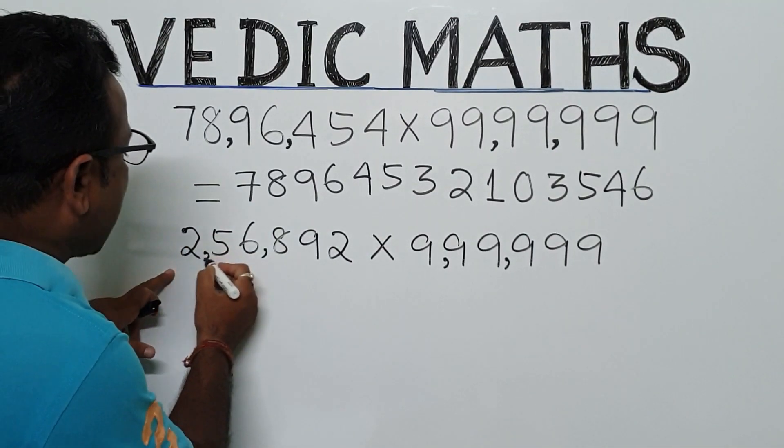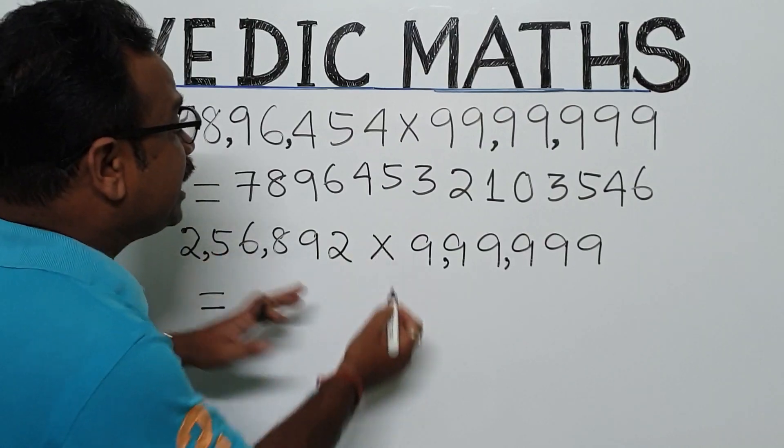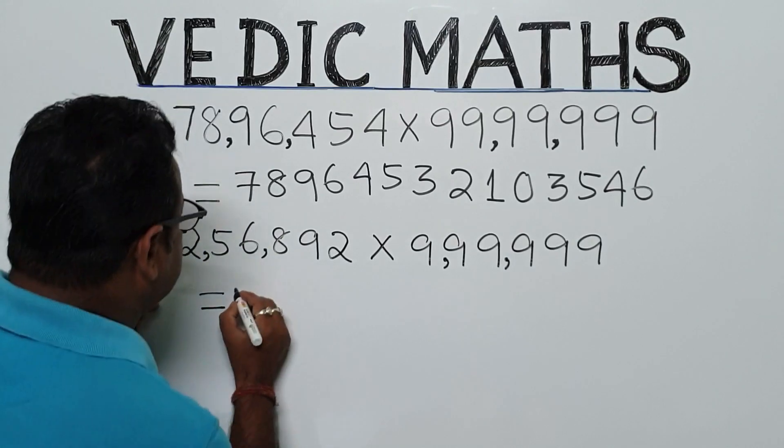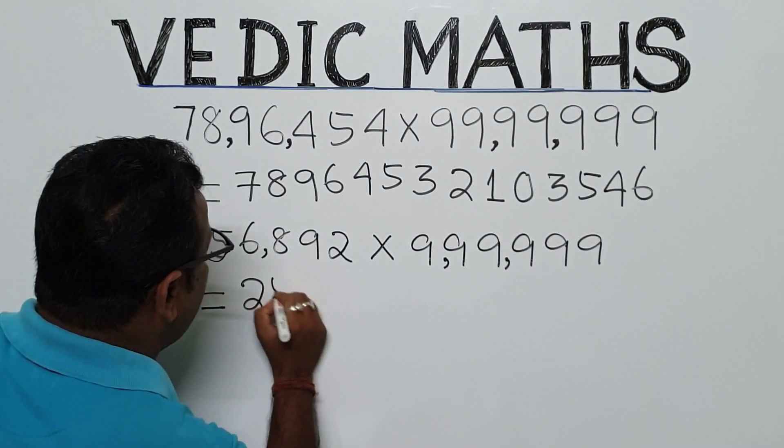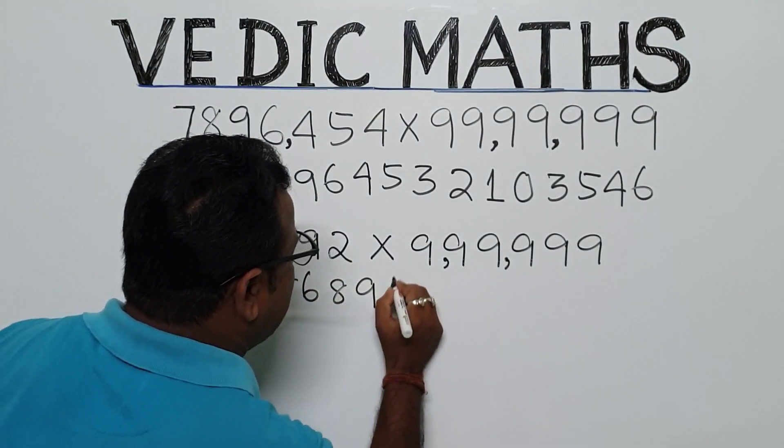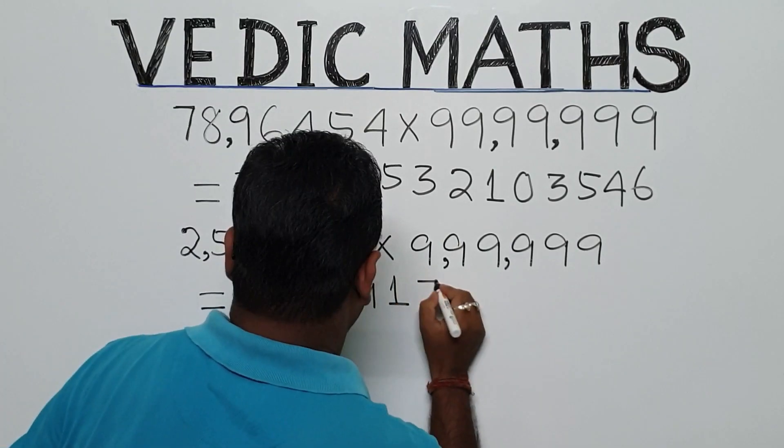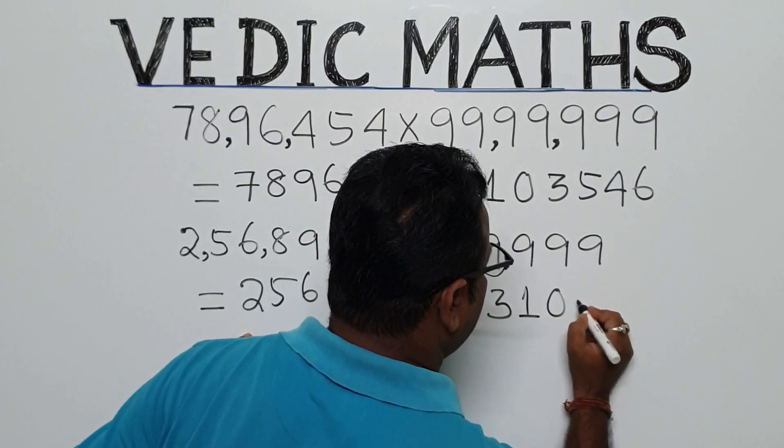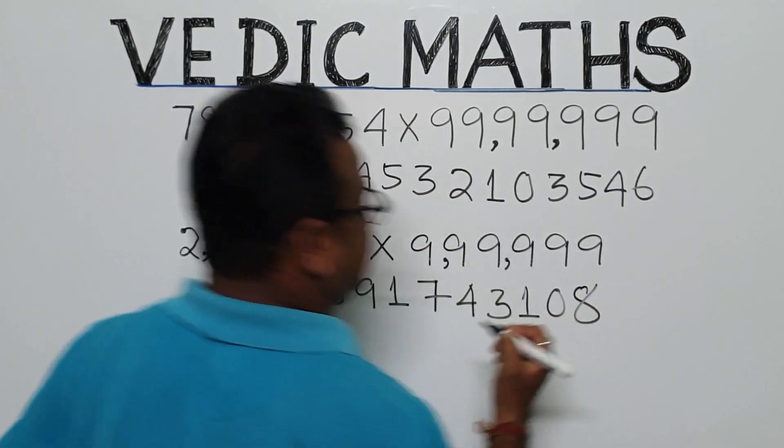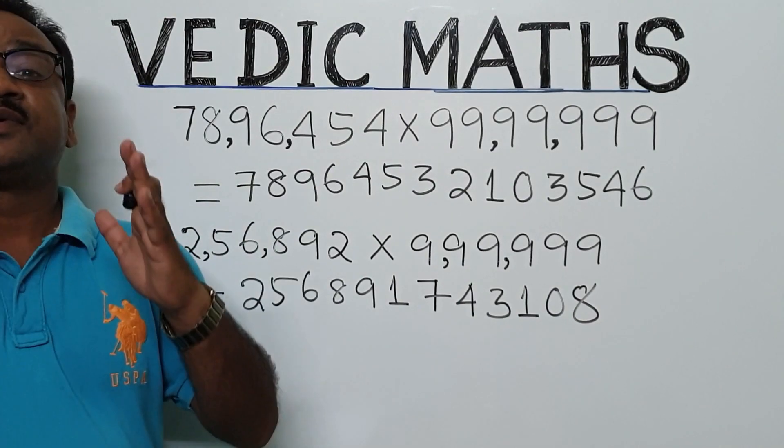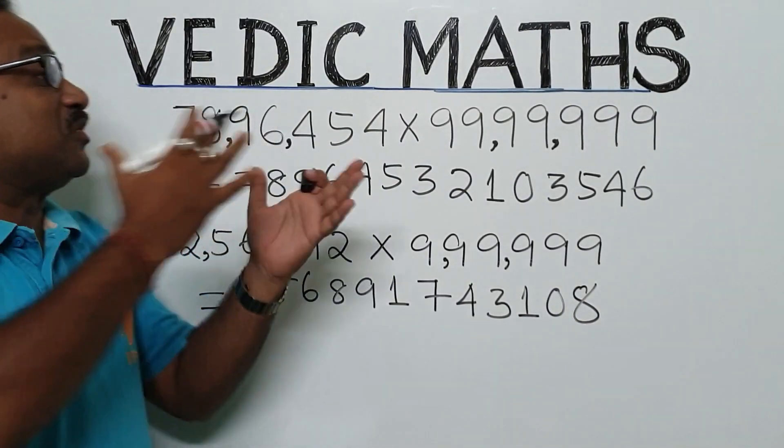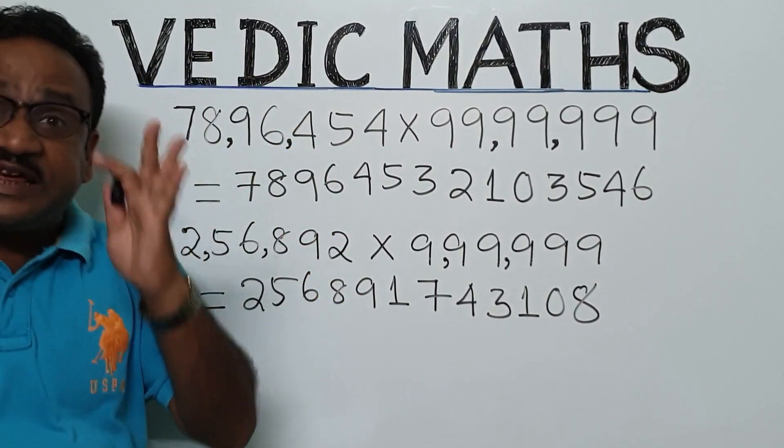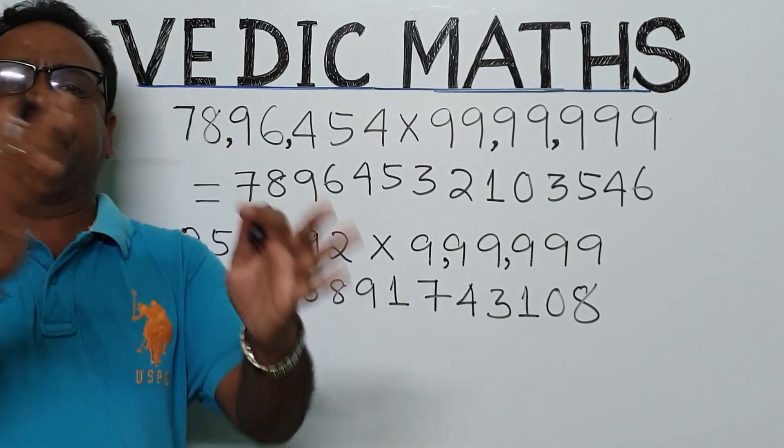What is the product of 2,5,6,8,9,2 into 9,9,9,9,9,9? The result is 2,5,6,8,9,1,7,4,3,1,0,8. How? So firstly, I have calculated all this by using Vedic math tricks, Ekanyunyena Purveno.